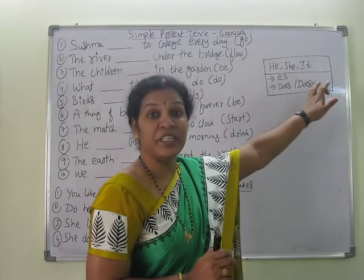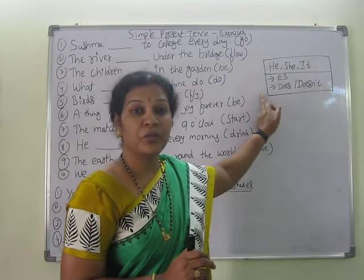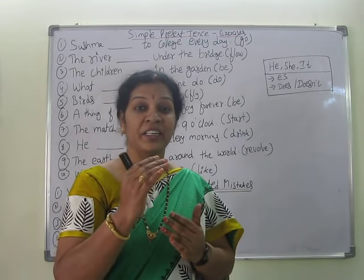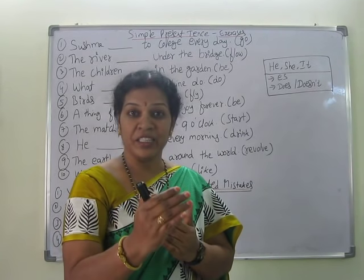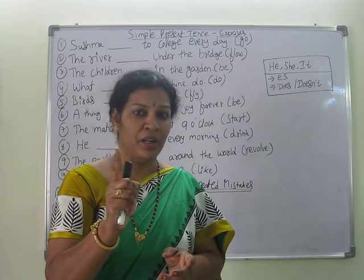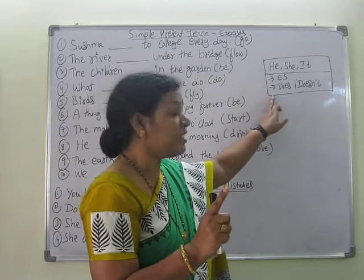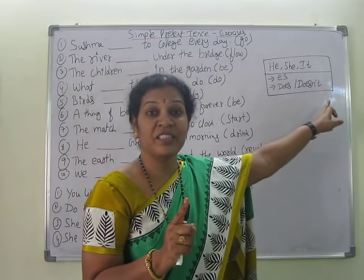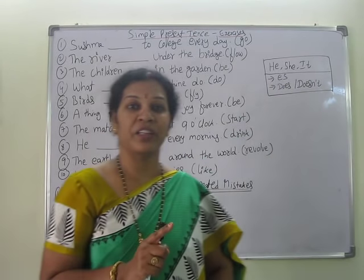He, she, it — whenever you use he, she, or it, you add 's' to the verb: 'it comes', 'she comes', 'he comes'. This is the first rule. And for the same he, she, it, you have to take 'does' or 'doesn't'. Does is positive, doesn't is negative. Remember this rule. Now let's get into the fill-in-the-blanks.